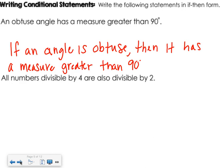Okay, what about all numbers divisible by four are also divisible by two? If the number is divisible by four, then it can be divided by two. Agreed? Yeah. Yeah, I think so too.